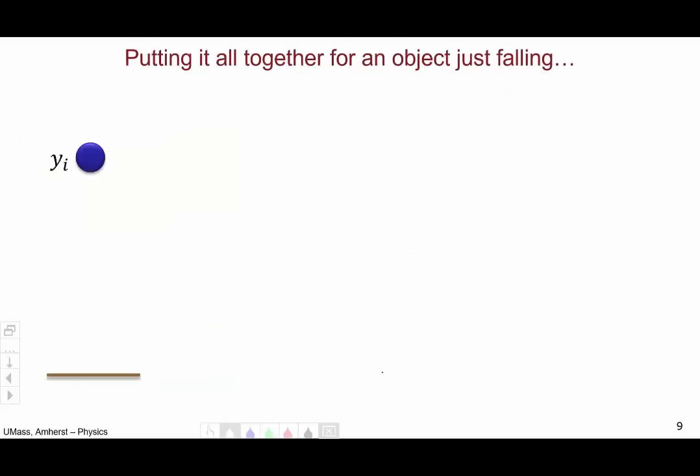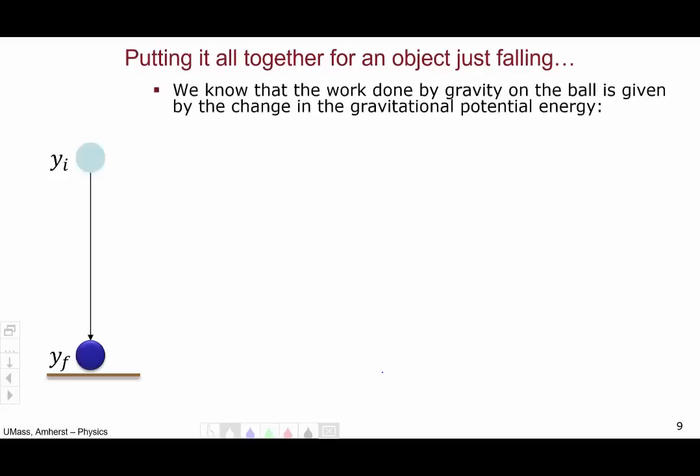So now let's put everything together, potential energy, kinetic energy, and work, for an object just falling. Probably the simplest case we can think of. So as an object just falls from a height yi to a height yf, we know that the work done by gravity on the ball is given by the change in the gravitational potential energy. Work equals minus delta u.